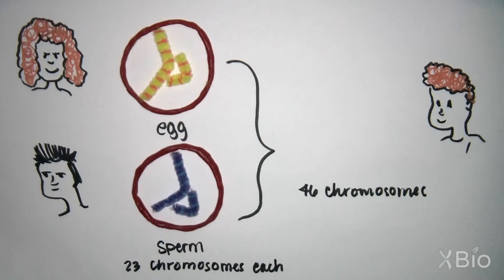Human gametes have one copy of each of the 23 chromosomes, which is half the number of most of our body cells. For simplicity, we will only follow two chromosomes through meiosis.